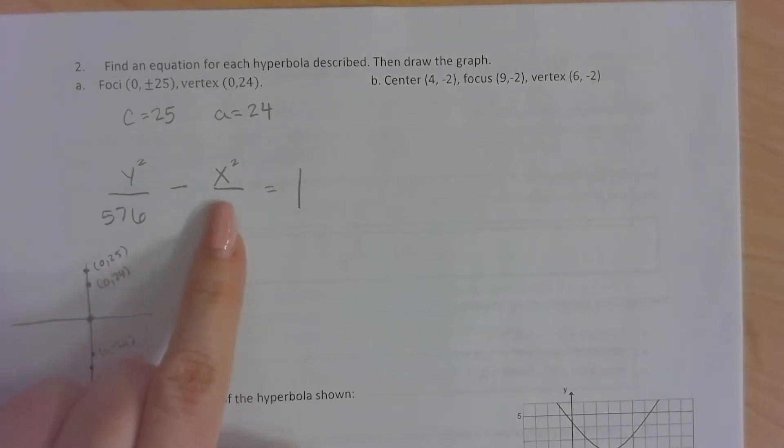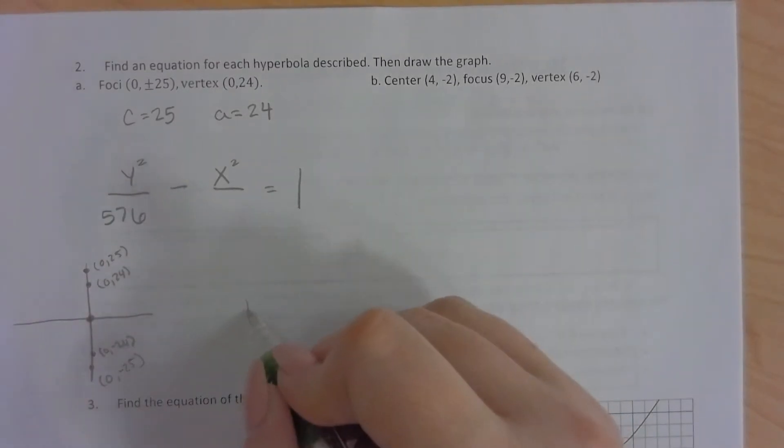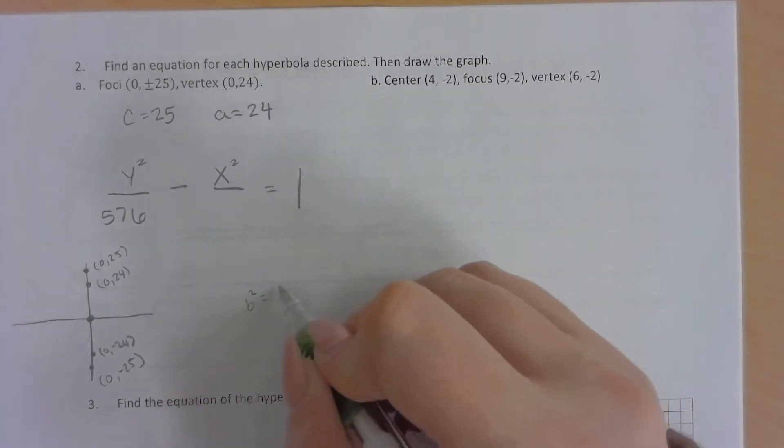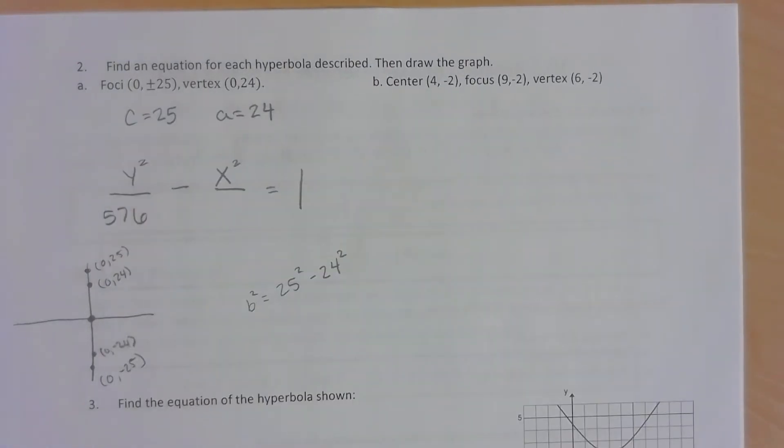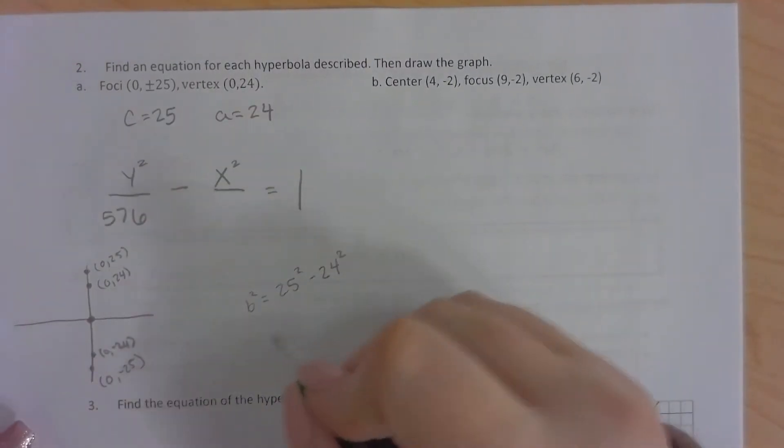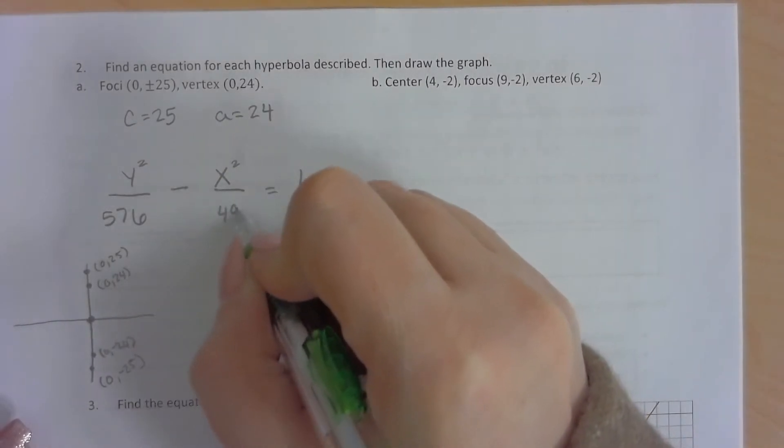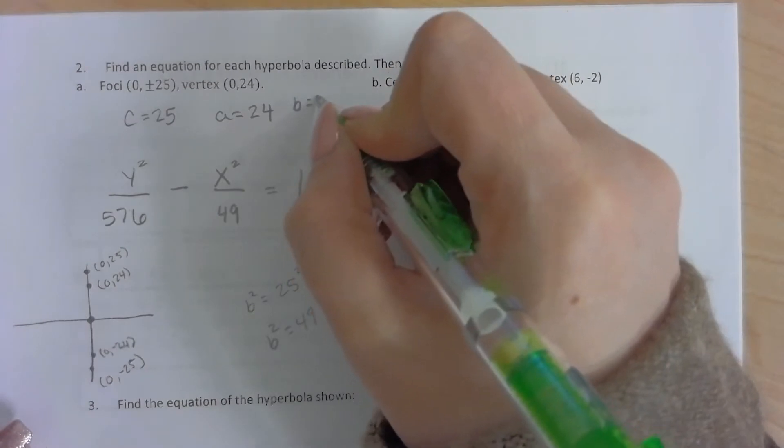Now I need to find b squared. So b squared is equal to c squared minus a squared. So 25 squared minus 24 squared gives us b squared of 49, which makes b seven.